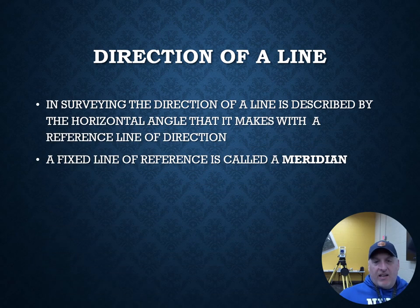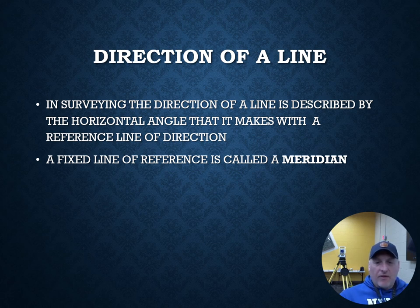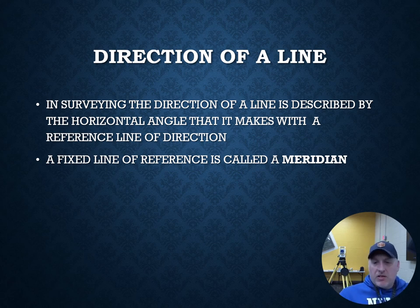In surveying, the direction of a line is described with the horizontal angle it makes to a reference line of direction. Those reference lines are called meridians. When referencing a bearing, we reference it to north, which would be our north-south meridian, or to south. For azimuths, we can reference to a north meridian, a south meridian, or even an east or west meridian — we just want to make sure we call that out.